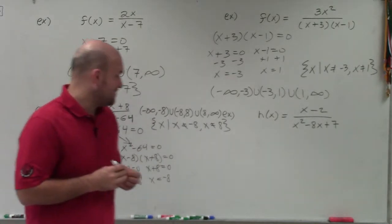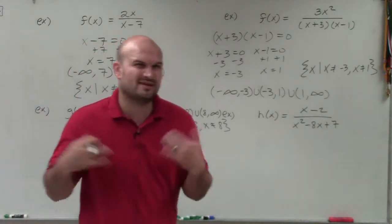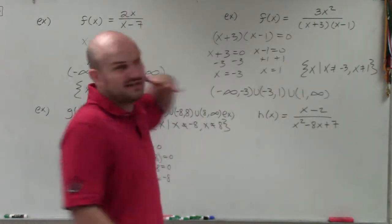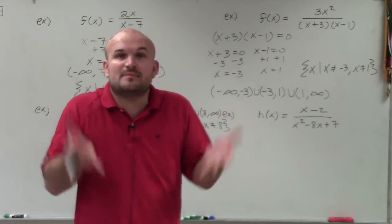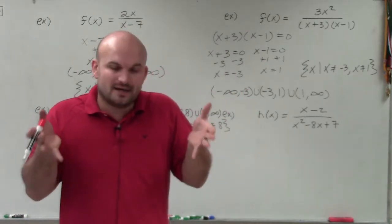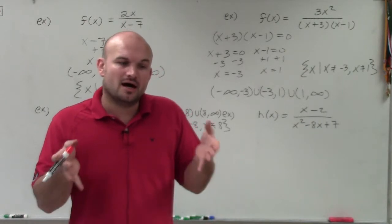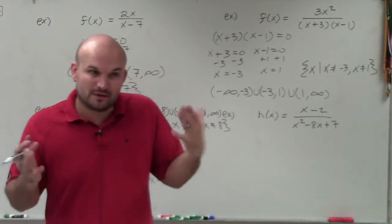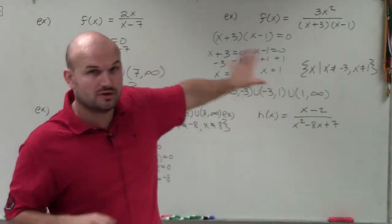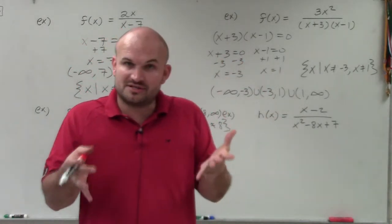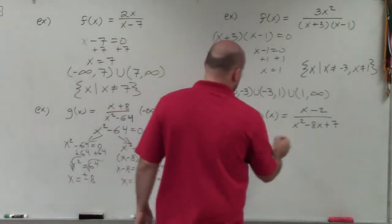For the last example, h of x equals x minus 2 divided by x squared minus 8x plus 7. One important thing to note: I haven't done anything with the numerator. When determining the domain, we don't care about the numerator — we're only concerned about what's not part of the domain, which is when the denominator equals 0. So we only care about when the denominator is equal to 0.